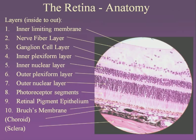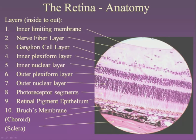This classic histologic picture of the retina shows the ganglion cells, the inner nuclear layer containing nuclei of the bipolar cells, and the outer nuclear layer containing nuclei of the photoreceptor cells, the photoreceptor pigment layers, the retinal pigment epithelium, and then the very pigmented and vascular choroid.